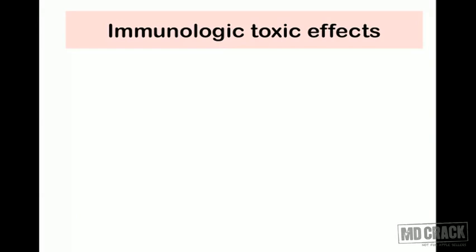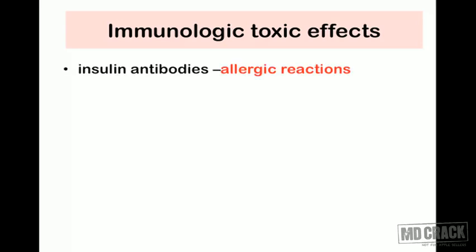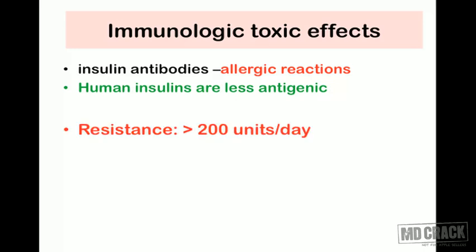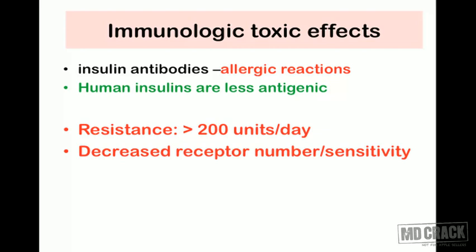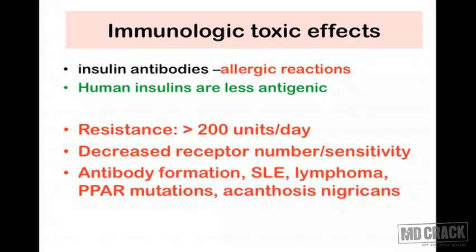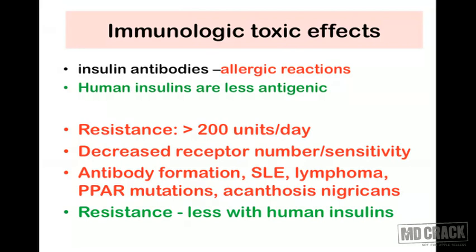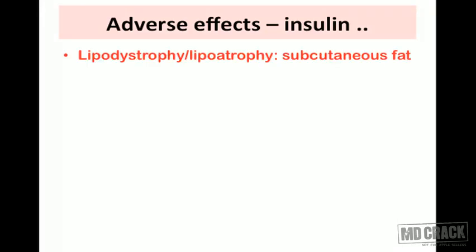Moving to the immunologic and toxic effects of insulin: insulin can stimulate antibody formation, leading to allergic reactions, though human insulins available today are much less antigenic. Insulin resistance is classically defined as requiring more than 200 units of insulin per day, caused by decreased receptor number or sensitivity. Associated conditions include systemic lupus erythematosus, lymphomas, PPAR mutations, and acanthosis nigricans. Insulin resistance is much lower with human insulins.